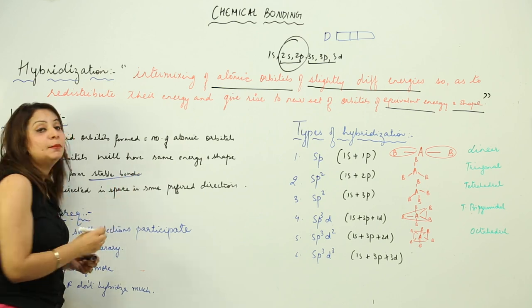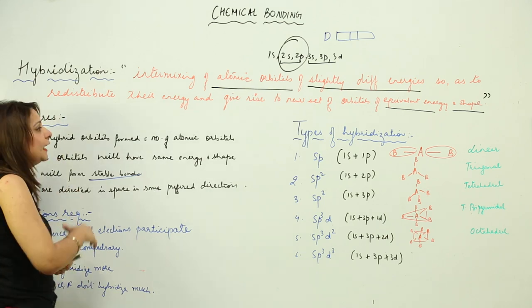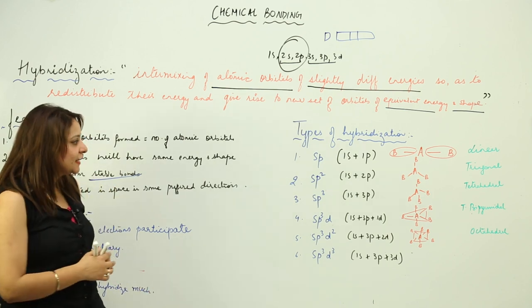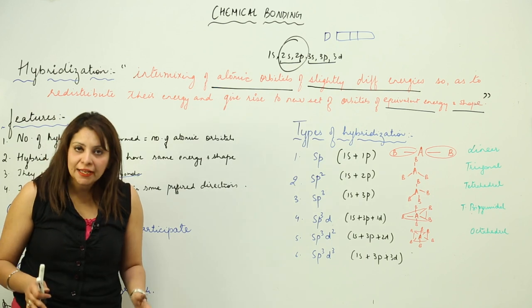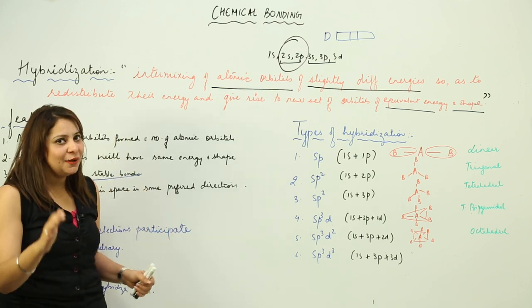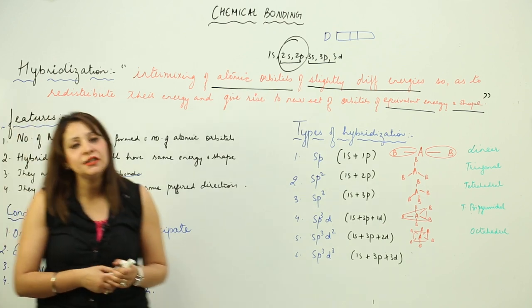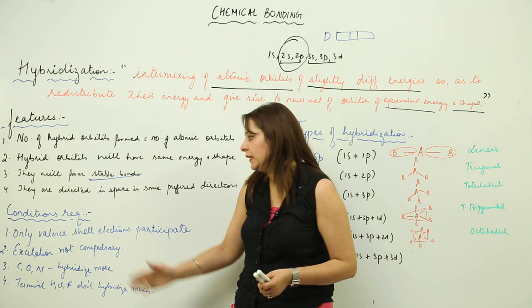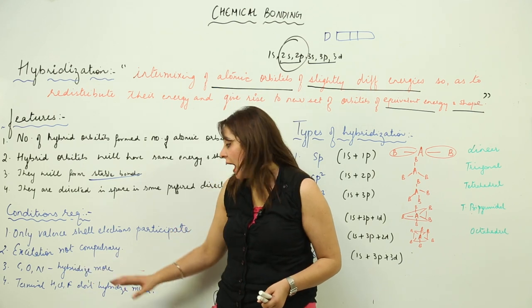Hybrid orbitals are more capable of forming stable bonds compared to their atomic orbitals. They direct themselves in space to minimize repulsion, giving rise to a perfect geometry and a stable arrangement. Only valence shell electrons participate in hybridization, and excitation is not a compulsory factor. Atoms that hybridize more include C, O, and N, while terminal atoms like H, Cl, and F do not hybridize much.